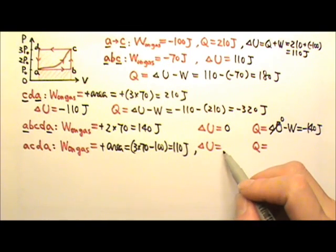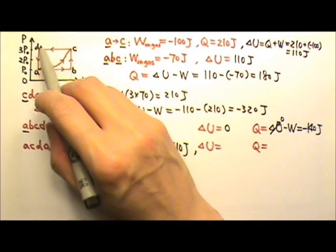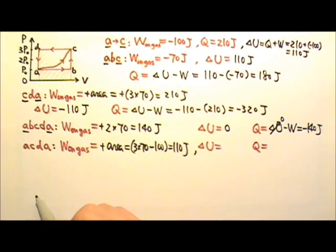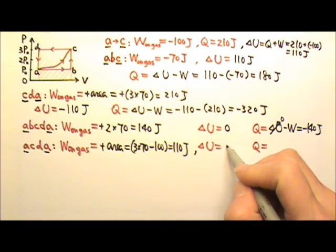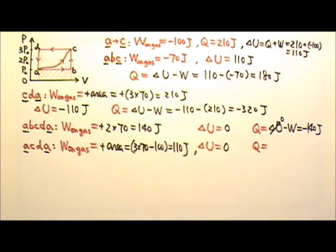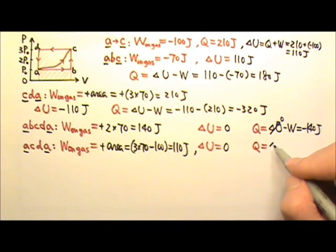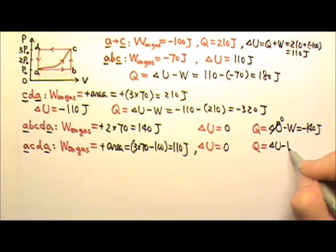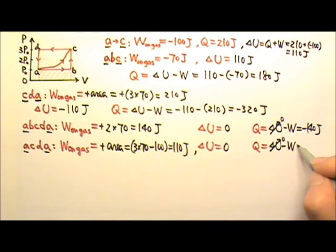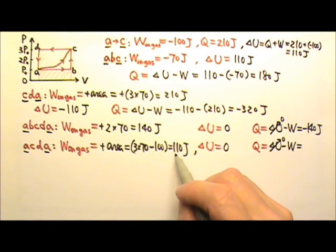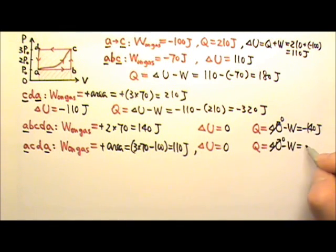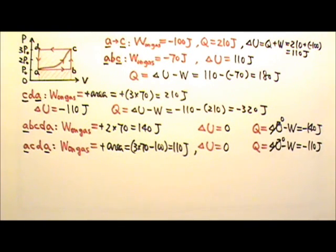Delta U for cyclic process ACDA: since we start on A and end on A, it must be 0. Q is delta U minus W. With delta U equal to 0, Q is negative W, which is negative 110 joules.